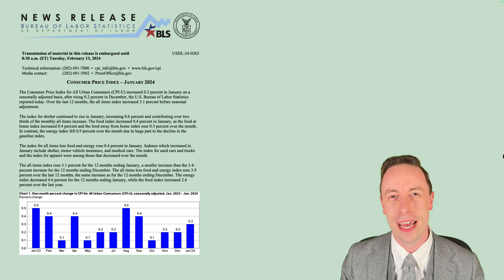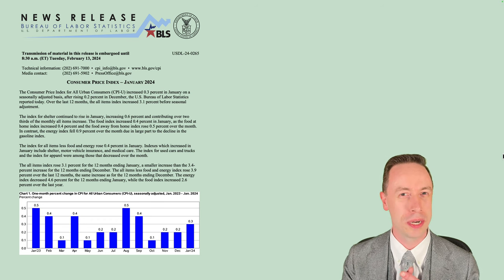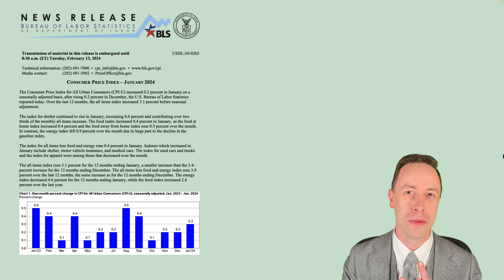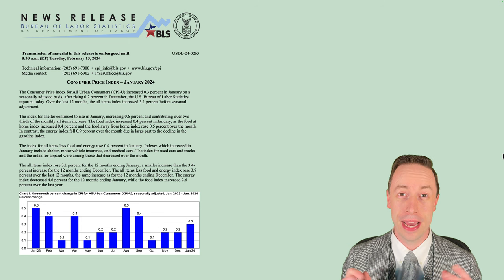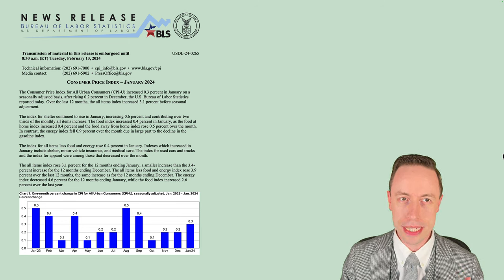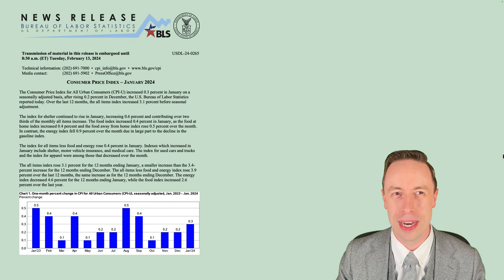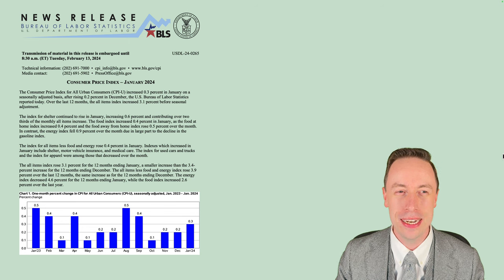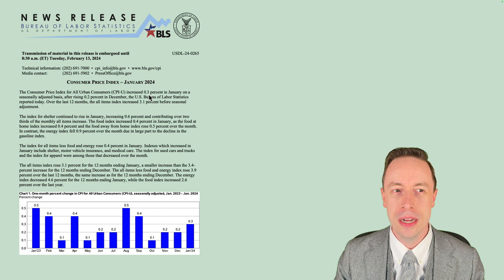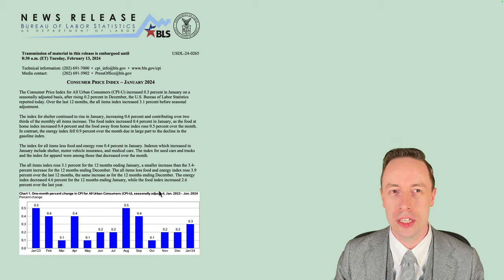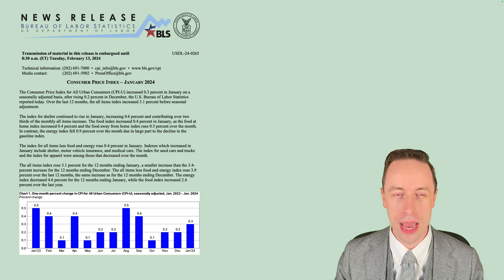Today we are going to learn about our final headline macroeconomic data series, having already covered gross domestic product GDP and the unemployment rate. Our final measure is the headline inflation rate. Here is a recent press release from the Bureau of Labor Statistics presenting new consumer price index figures. We see that prices are up 0.3 percent in January over the previous month December, and 3.1 percent year over year. There's also a nice chart of the monthly changes in the consumer price index.